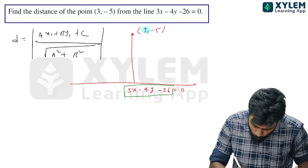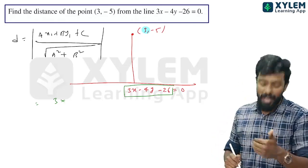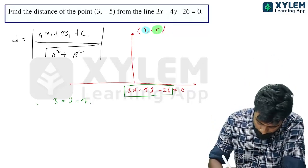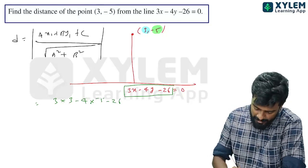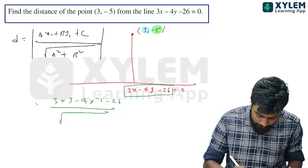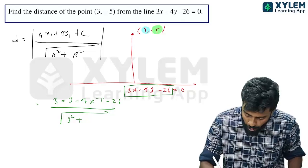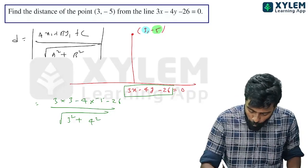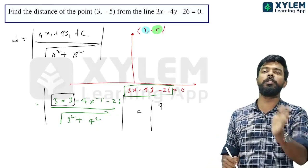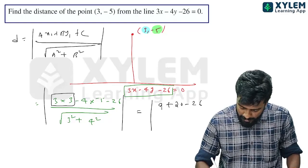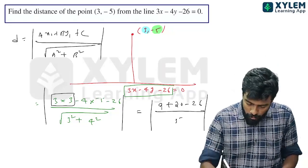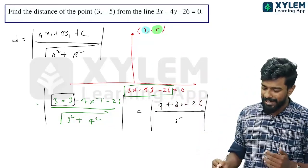So 3 into x-coordinate 3, minus 4 into y-coordinate which is minus 5, minus 26, divided by root of a² plus b². a is 3 so 3 squared, and b is 4 so 4 squared. The answer is modulus of 9 plus 20 minus 26, divided by root of 3² plus 4² which is root 25, that is 5. So 20 plus 9 is 29, 29 minus 26 is 3. The answer is 3 by 5.